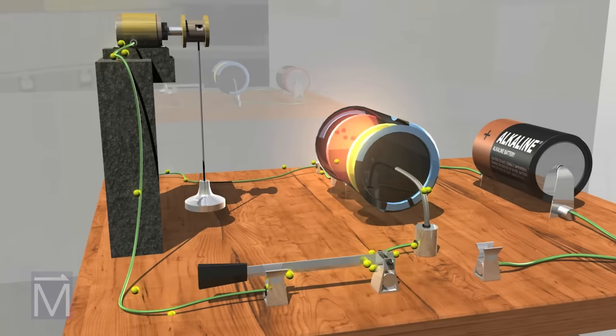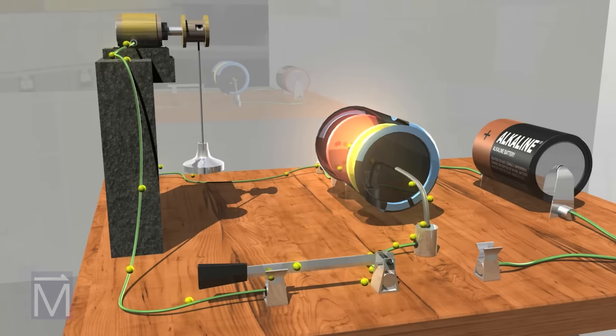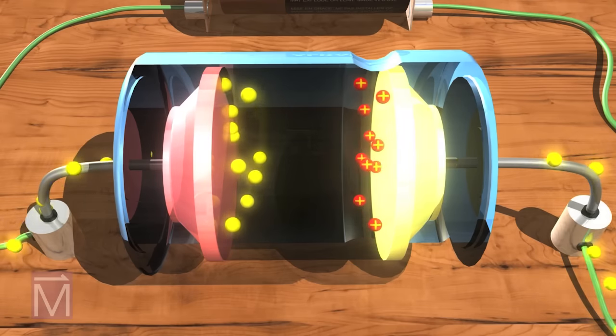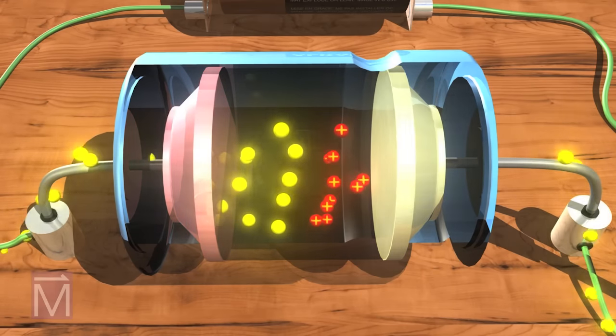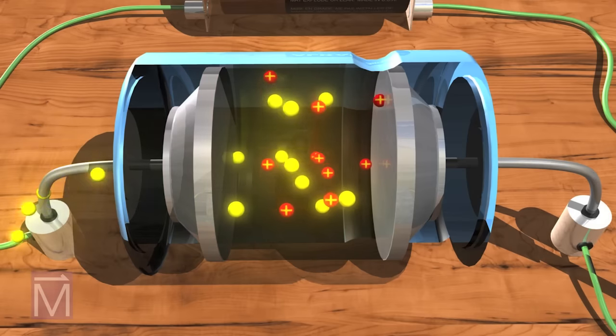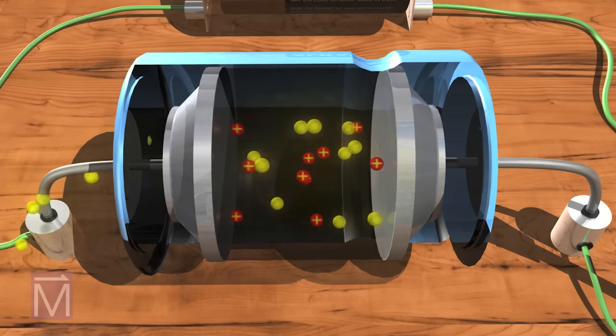This electrical current powers the pulley to lift the weight until the charge dissipates. The electrons on the capacitor's negative terminal are drawn to its positive terminal. They rush along the path that leads there, straight through the motor.